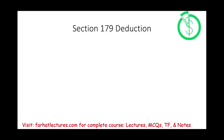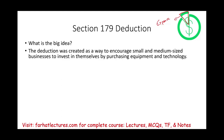Hello and welcome to this session in which we will discuss Section 179 deduction. What is the big idea of Section 179? The idea is to give businesses a deduction — more expenses to reduce their taxable income. This deduction encourages businesses to purchase property, plant, and equipment. It specifically targets small and mid-sized businesses, encouraging them to invest in themselves by purchasing equipment and technology. By doing so, you can have a tax deduction called Section 179.